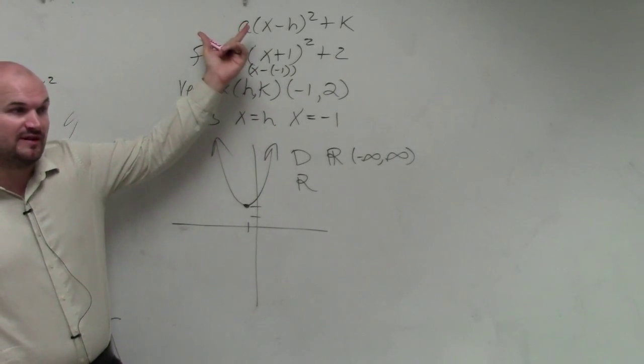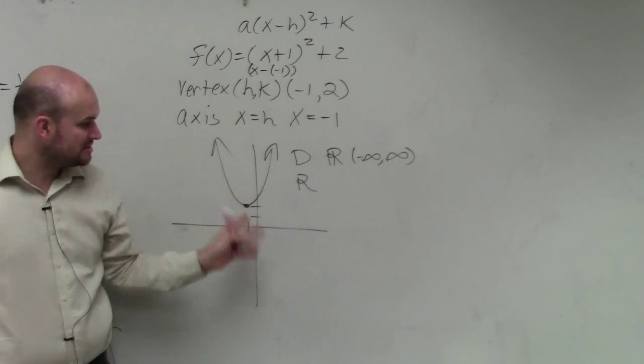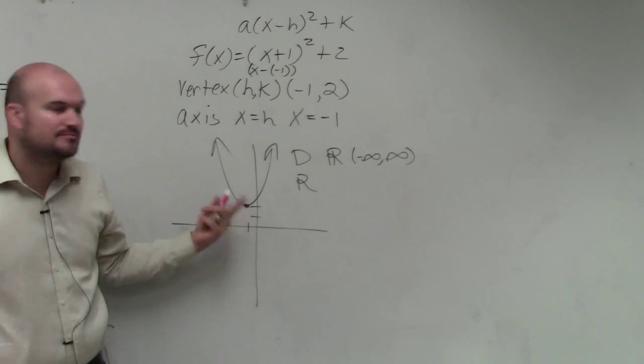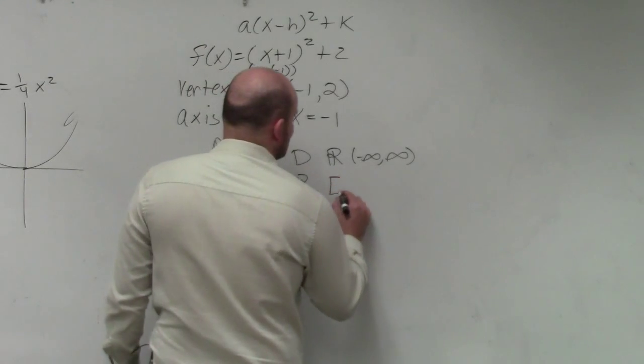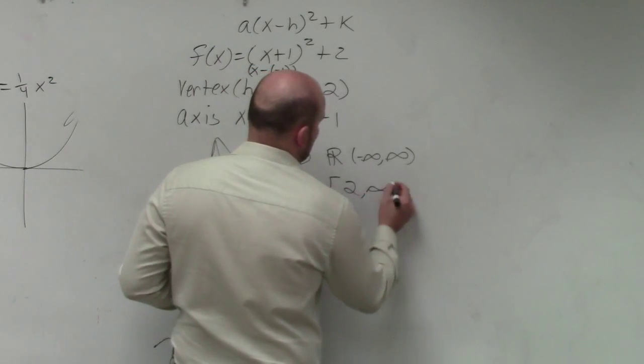You can see the graph goes infinitely up, so the highest value is infinity. But the lowest value would be positive 2. So we use brackets because 2 is a y value on this graph, and it goes to infinity.